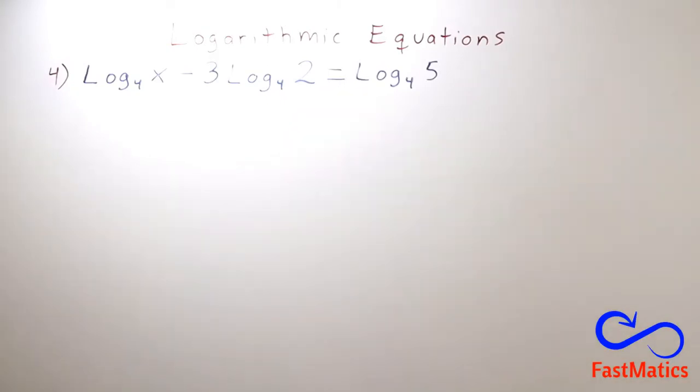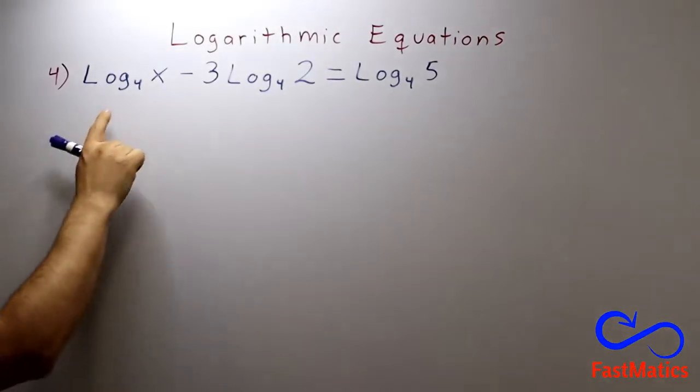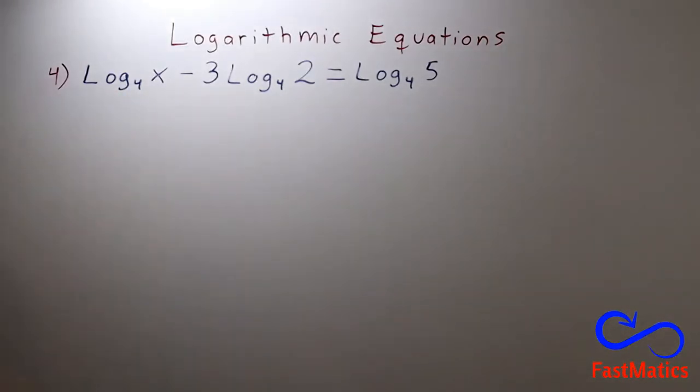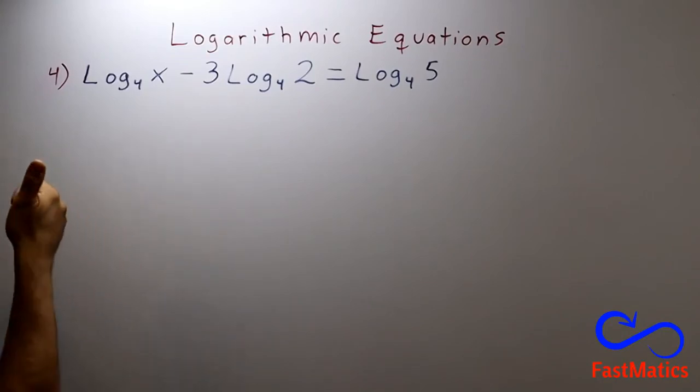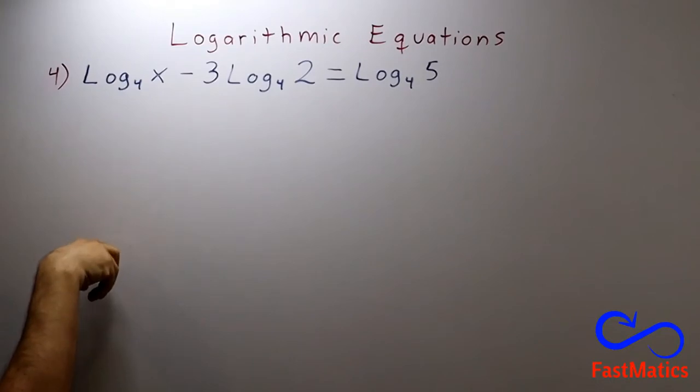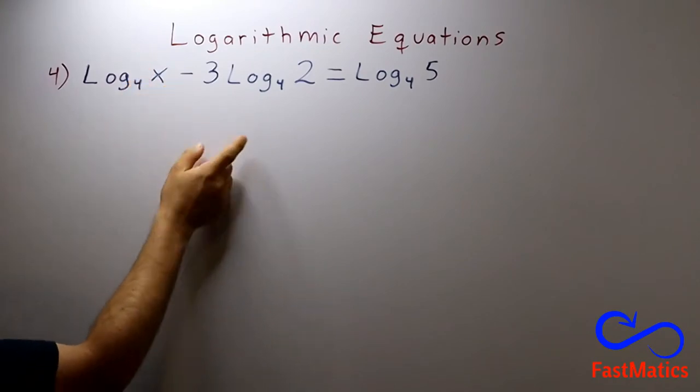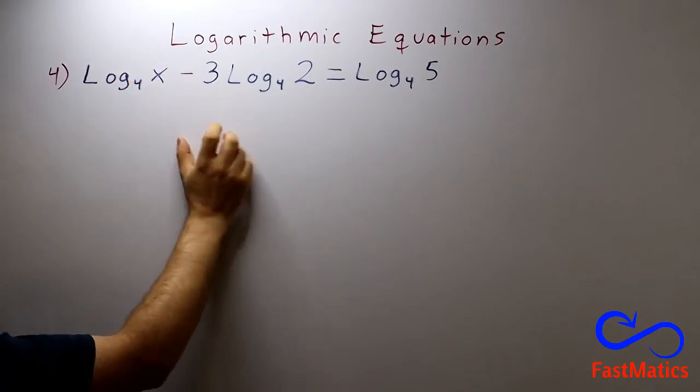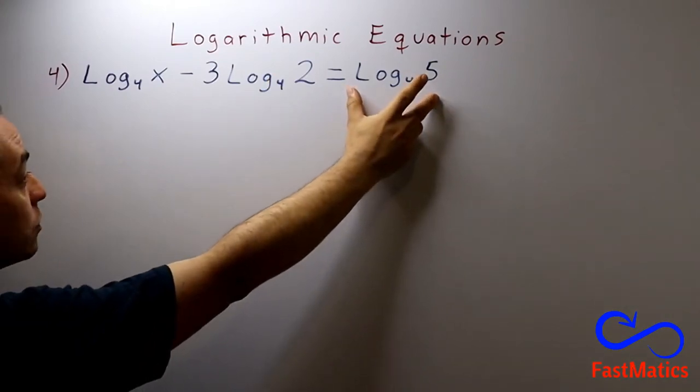First of all, we're going to identify that this is an equation and that it's a logarithmic equation. After that, we have to see if we have only one term on the left side and only one term on the right side. Here I have one term separated by a negative sign of another term, and here I have only one term.